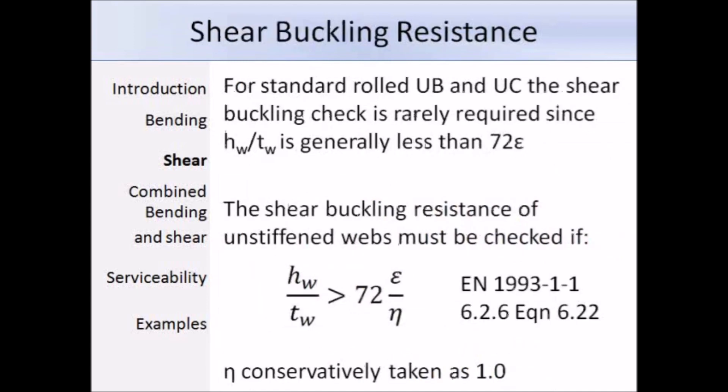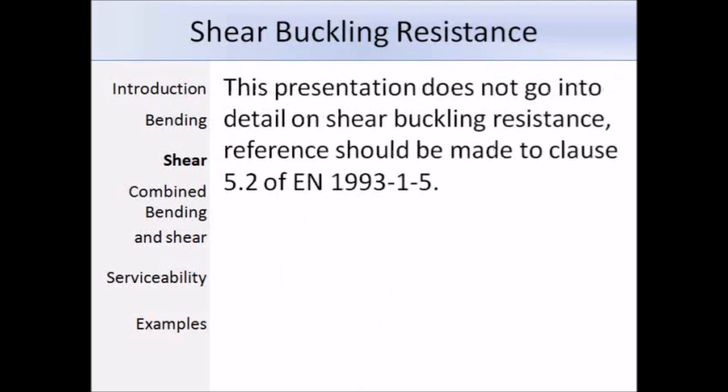Another thing that we need to consider is the shear buckling resistance of the section, but for most standard rolled sections, this check is not really necessary, since the height of the web divided by the thickness of the web is usually less than 72 epsilon. This is the expression given in the Eurocode, expression 6.22, and eta can be conservatively taken as 1. So as I said before, it's very rarely that we'll ever need to check the shear buckling resistance of unstiffened webs for standard rolled sections. I'm not going into any more detail about shear buckling resistance in this presentation, but just so that you know, reference should be made to clause 5.2 of EN 1993-1-5.